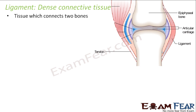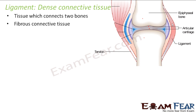Ligament is a tissue which connects two bones. Since it connects two bones, that is why it is a connective tissue. If you look at this picture, you have two bones here. The cap of the bone is cartilage. Ligament is the portion which joins these two bones. So anything which joins two bones is a ligament. Ligament is a fibrous connective tissue — it has more of fibers.